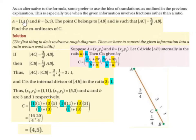Example 2: A is equal to (1, 11) and B is equal to (5, 3). The point C belongs to AB such that AC is 3/4 of AB. Find the coordinates of C.